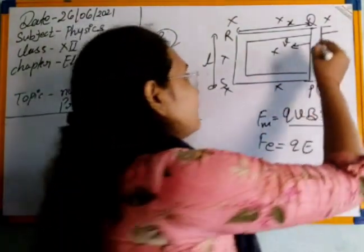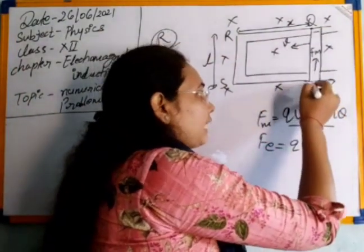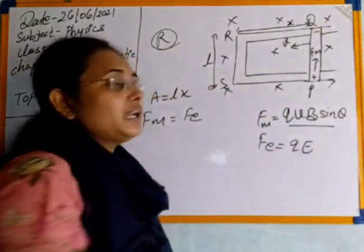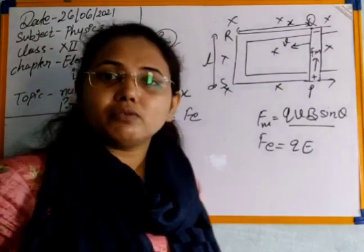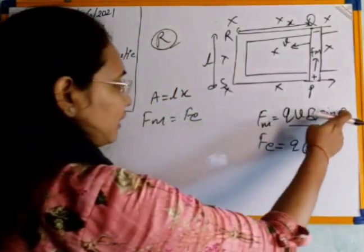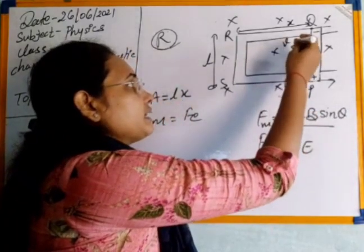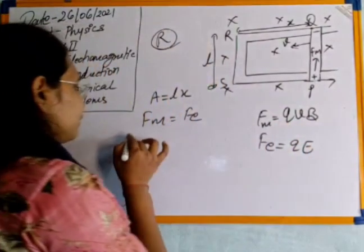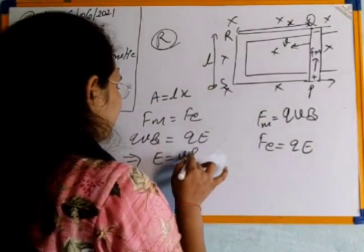At the instant when F_m equals F_e, the accumulation of electrons stops because the Lorentz force is counterbalanced by the electrostatic force. At that time, end Q has excess negative charge and end P has a deficiency of negative charge, making it positively charged. A potential difference is created across conductor PQ, and due to this potential difference, an EMF is generated. Since theta between velocity vector and magnetic field is 90°, sin(90°) = 1.